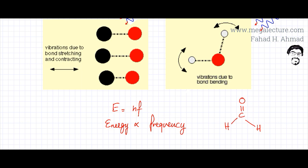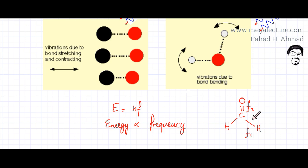So these two CH bonds are going to absorb one frequency — let's call that F1 — from the infrared spectrum. The C=O is going to absorb a different frequency, let's call that F2. So this molecule would be absorbing two different frequencies from the infrared spectrum. Although it has three bonds, these two CH bonds absorb the same frequency, whereas the C=O absorbs a different frequency.